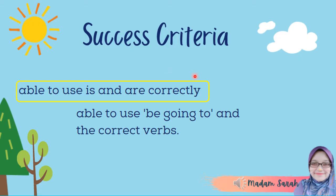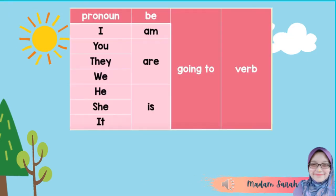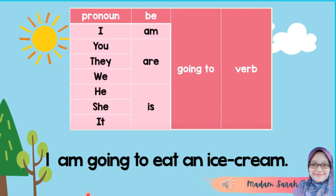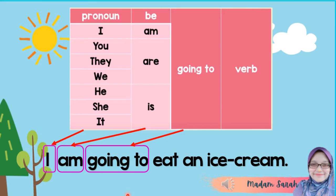By that, you have achieved your first success criteria, which is able to use is and are correctly. Let's look at the table. This table is to guide you in making sentences. I am going to eat an ice cream. The pronoun is I, the verb to be is am, going to, and the verb is eat. Then we continue the sentence with an ice cream.